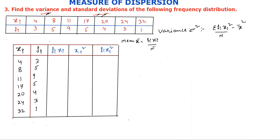Here, n is the total number of observations. We can adjust the number of columns accordingly.